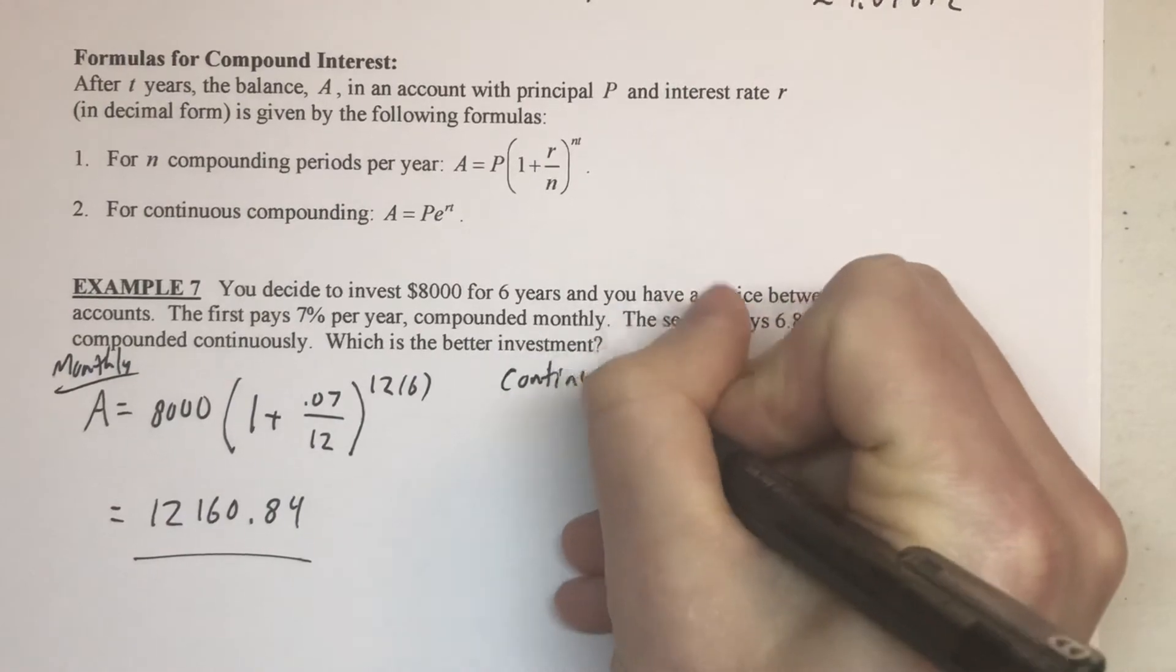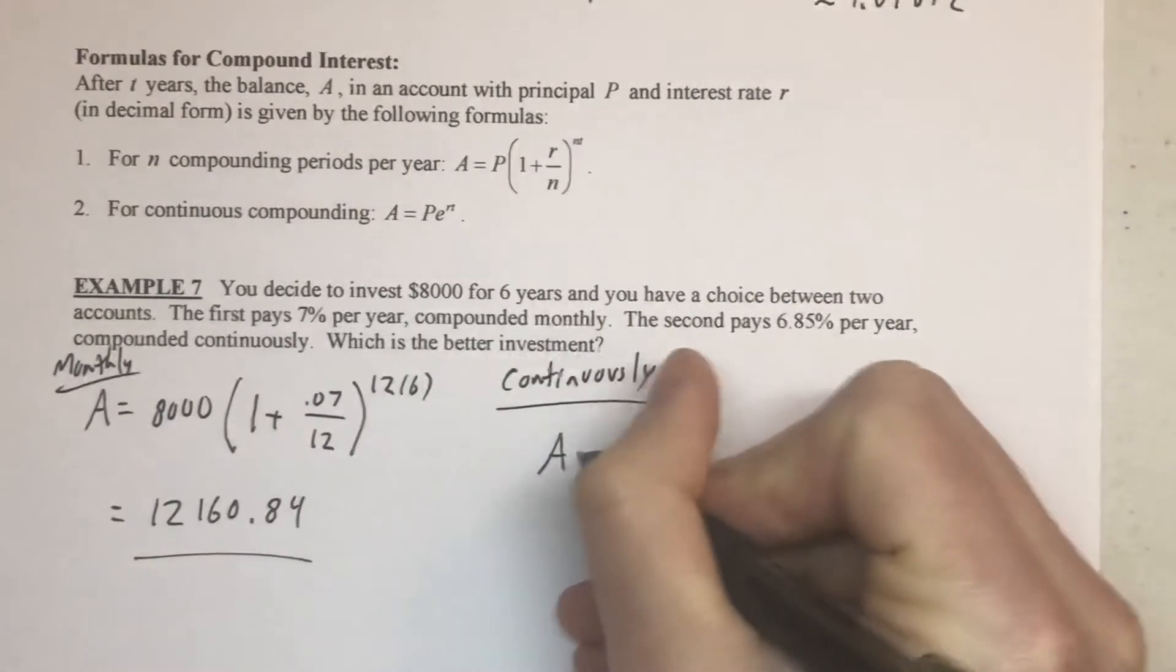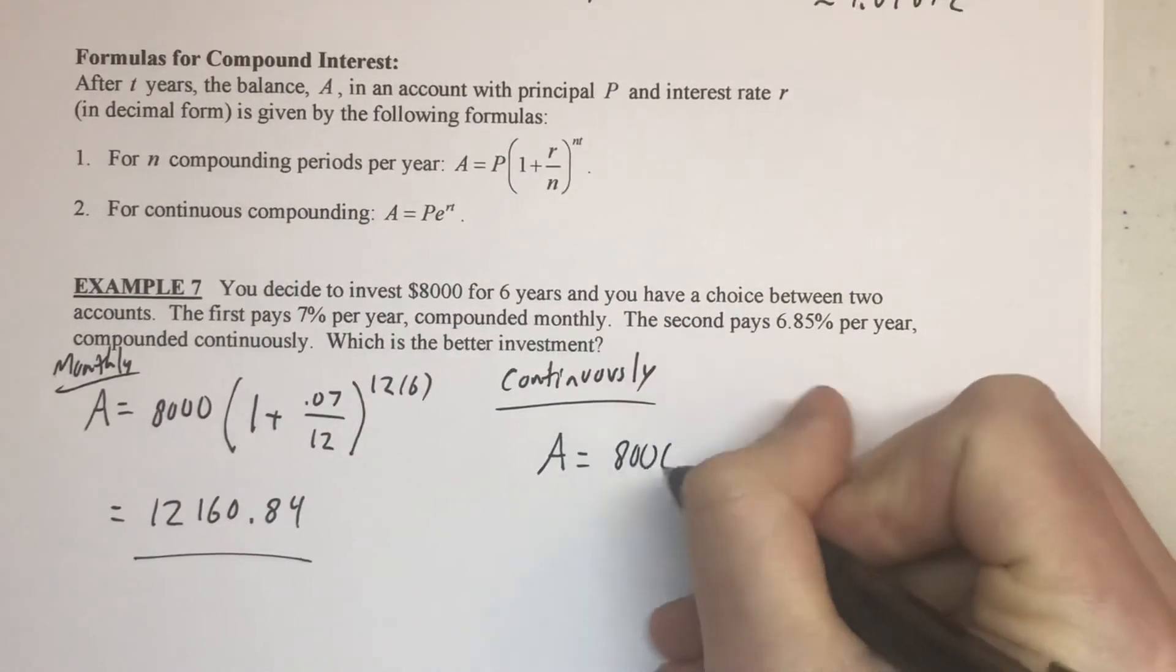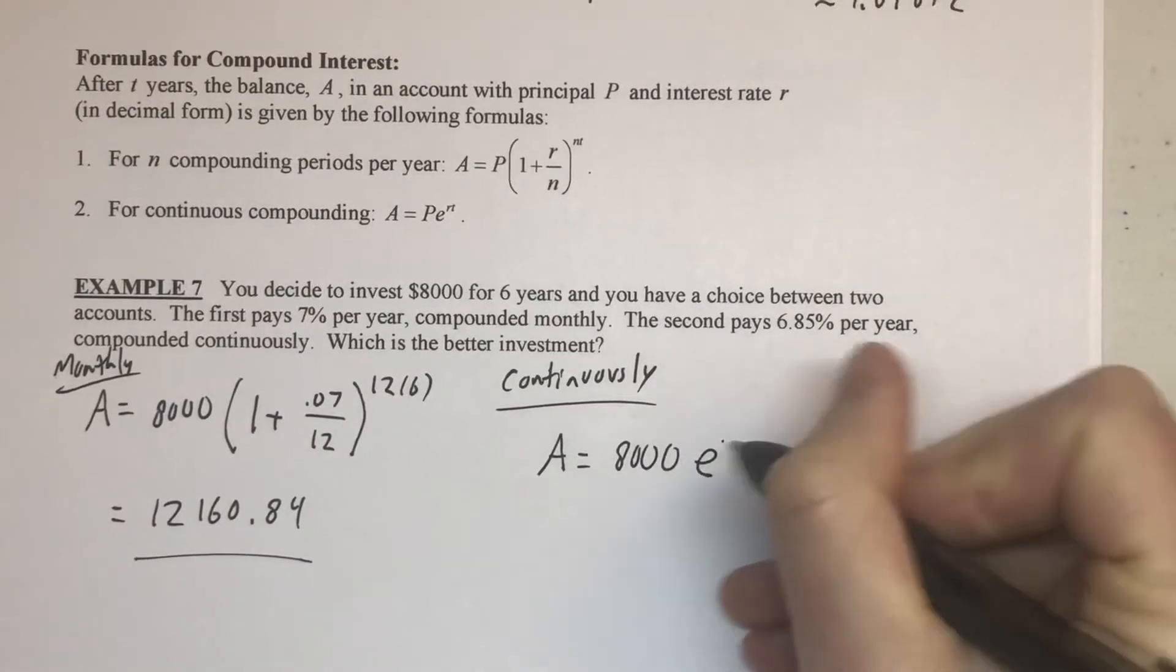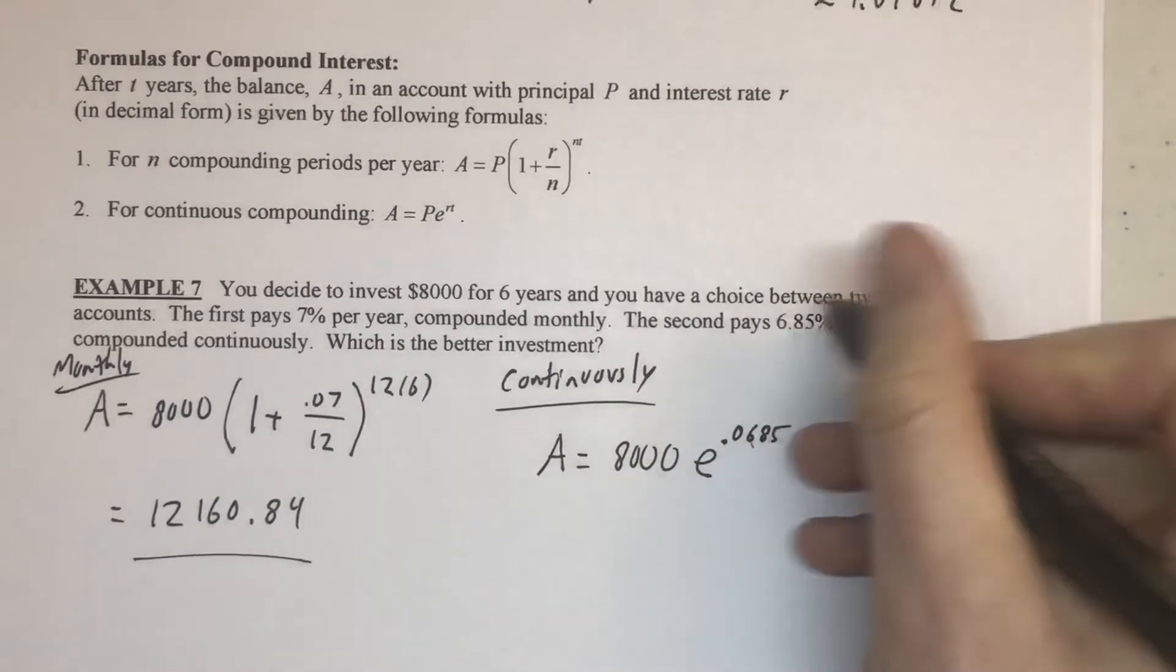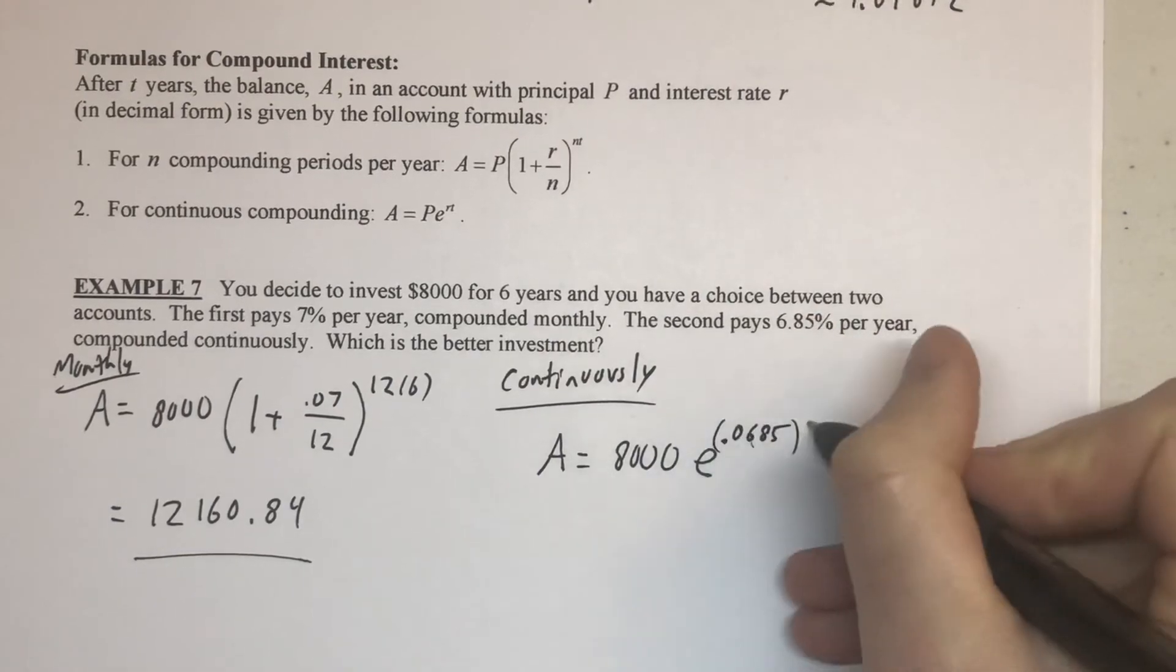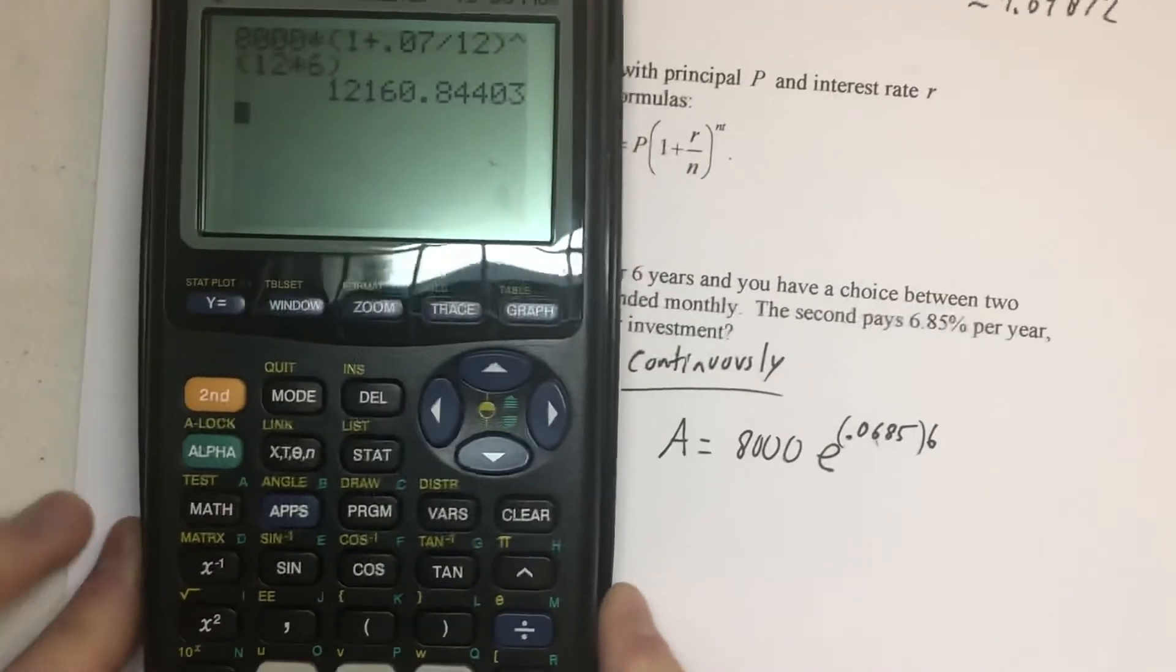But if we wanted to compound continuously, then that formula is just the principle of 8,000 with e raised to the r times t, r again being the rate of 0.0685, 0.0685, t being the number of years, so six years. So I'm entering that into our calculator here.